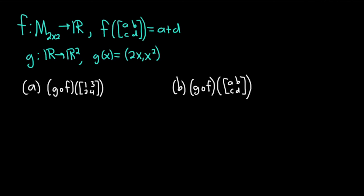Hi, in this video we're going to find some function compositions. So we have two functions here, f and g. f is a function from this set here, the set of all 2x2 matrices into the set of real numbers. And it's defined as follows: it basically takes the sum of the diagonal elements.